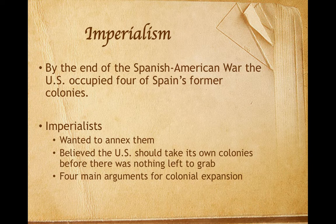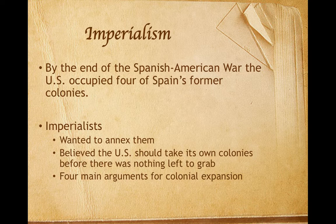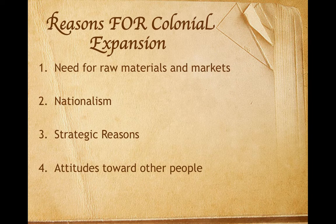By the war's end, the United States was occupying four of Spain's former colonies. Many Americans believed they should annex them. These American imperialists saw this as a unique opportunity, pointing out how European powers had recently acquired colonies in Africa and Asia, so they believed the United States should take its own colonies before there was nothing else left to grab. Imperialists gave four arguments on behalf of the United States for colonial expansion. First, the need for raw materials and markets. The United States was now an industrial power. Colonies could provide needed raw materials for factories, a guaranteed market for manufacturers, and a place for farmers to sell their surplus crops.